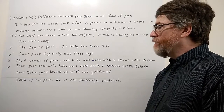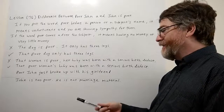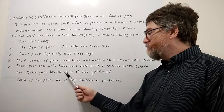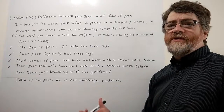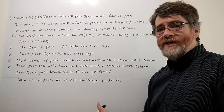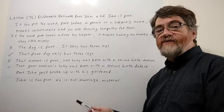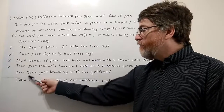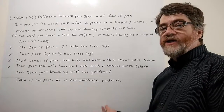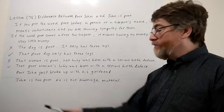Getting back to the original title — here are examples using 'poor John.' 'Poor John just broke up with his girlfriend.' Maybe he's depressed. 'Poor John, he's been so unhappy recently.' So again, you're showing sympathy for him. 'Poor' before the name or subject means unfortunate — you're showing sympathy.